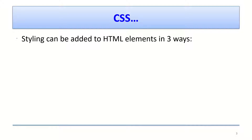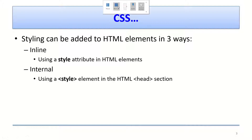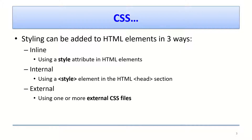We can use style sheets in HTML documents in three ways. The first is inline CSS, where we use the style attribute in HTML elements. The second is internal CSS, where we use the style element in the HTML head section. The third is external CSS, where we use one or more external CSS files and create a relationship with the HTML document using a relationship attribute.